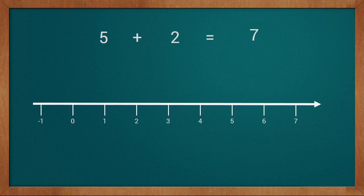This is our number line. Our first value is 5. So we will find 5 on the number line. We will start from 0 and count 5 points forward: 1, 2, 3, 4, and 5. This way we reached 5.